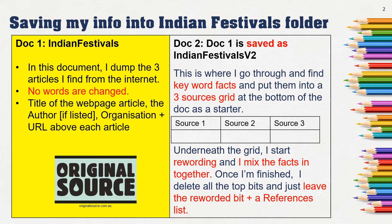Now I start rewording and smushing all the facts in together. I use all my tricks like synonyms, moving chunks around, adding emotive language, putting in a rhetorical question, and adding lots of extra words of my own. I'm really using the facts from three sources, but I'm now mixing them all together and making sure that the wording looks really different. Underneath, I create a references list — sometimes called a bibliography — so that I'm saying where I found them.